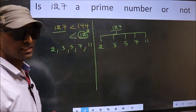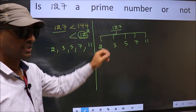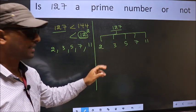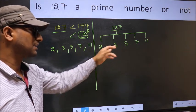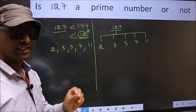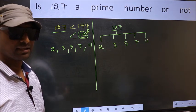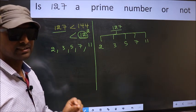If the given number is divisible by any one of these numbers, we say it is not a prime number. Otherwise, it is a prime number.